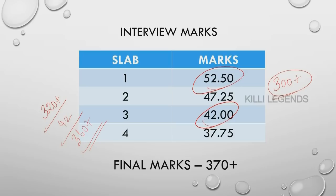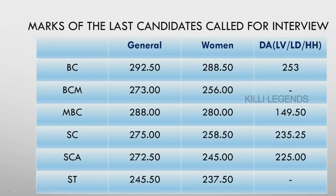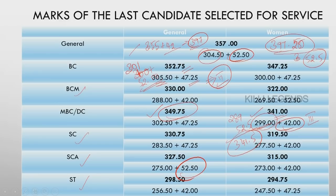You have high probability of getting into service. This is the exact number. Assumption is last time cutoff: 292, in the range 250 above and 275 above. In the range, the other category is BC and MBC, and few SC also.